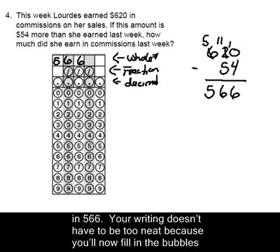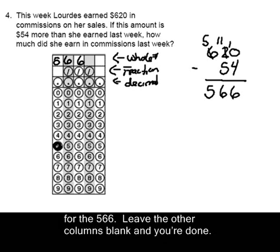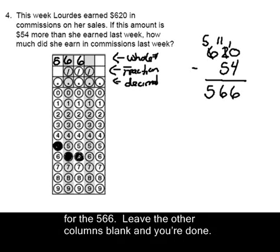Your writing doesn't have to be too neat, because you'll now fill in the bubbles for the 566. Leave the other columns blank and you're done.